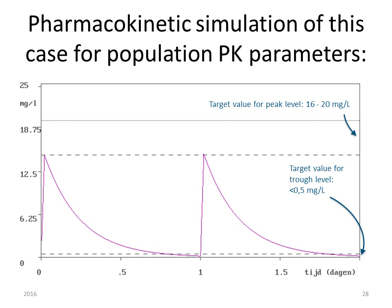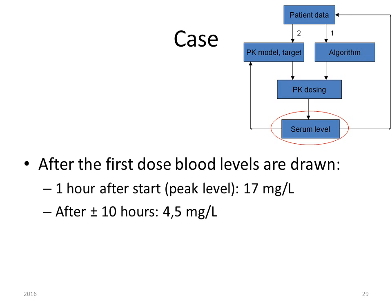Using average population pharmacokinetic parameters, this dosing scheme of 320 milligrams once daily will result in a predicted concentration-time profile. Serum levels are then drawn: one hour after the start, the peak level is 17 milligrams per liter, and about 10 hours after the start of treatment, a second level is drawn at approximately 4.5 milligrams per liter. The actually measured serum concentrations are a bit higher than expected from the population model.